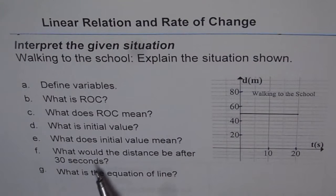Now, what would the distance be after 30 seconds? Looking at the situation, we say, well, the situation is that there is no rate of change. The rate of change is 0. And therefore, the distance will remain the same as it is, which is 50 meters.